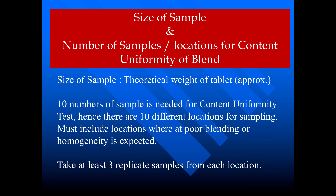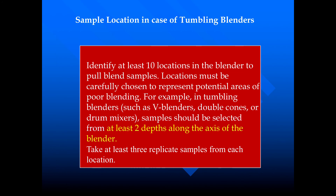There are 10 different sampling locations, and these must include locations where poor blending or poor homogeneity is expected. Take at least 3 replicate samples from each location. For content uniformity of the blend in the case of a tumbling blender, identify at least 10 locations in the blender to pull blend samples. Locations must be carefully chosen to represent potential areas of poor blending. For example, in a tumbling blender such as a V-blender or double cone blender, samples should be selected from at least two depths along the axis of the blender, and we have to take at least three replicate samples for re-analysis or re-testing.